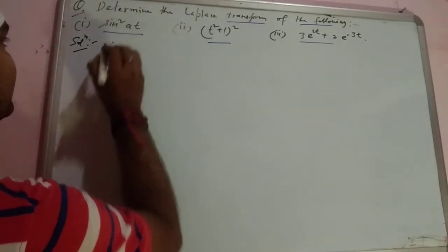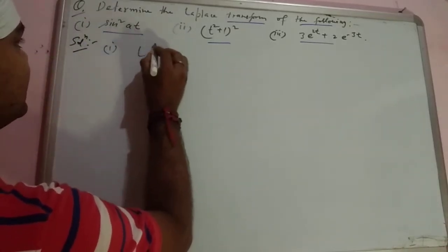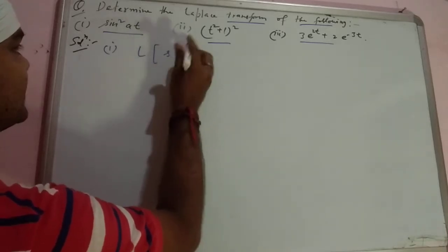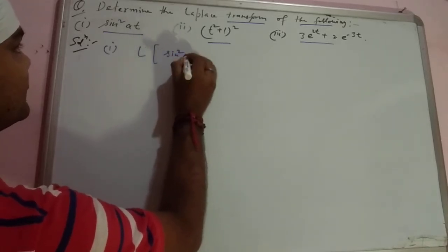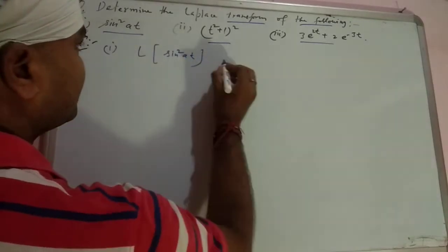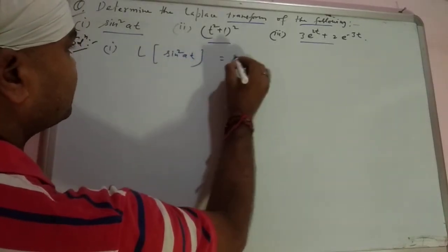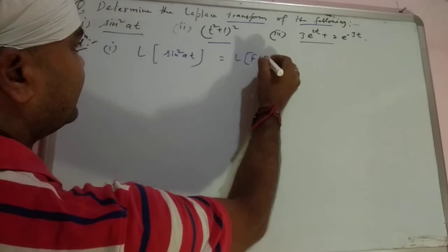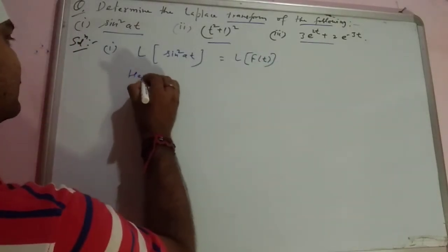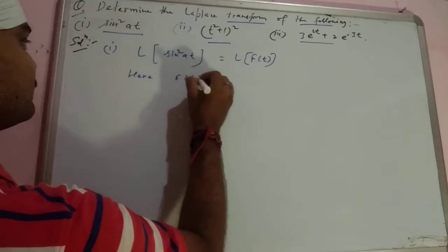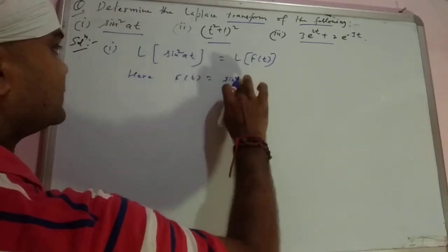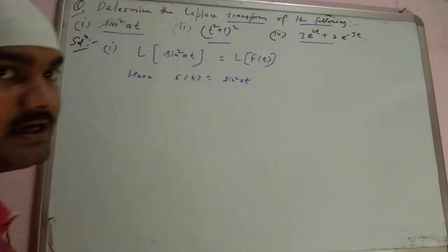Let's start with the first question. We need to find the Laplace of sine square at. So here f(t) is sine square at.